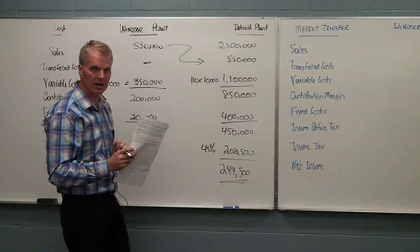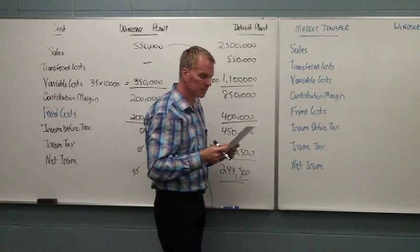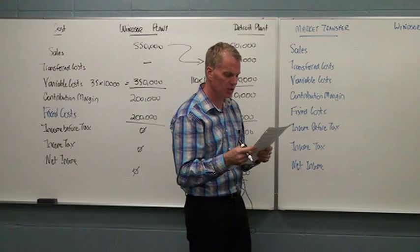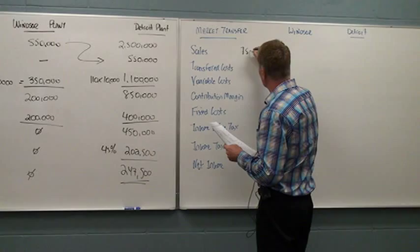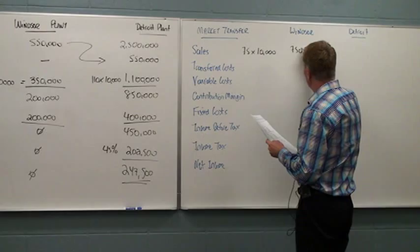The market price. Let's take a look at this now. So you're told in the question that the market price per tube is $75 per tube. So if Windsor was going to use that rate, that's the sales amount that they would basically record. So $75 times 10,000 tubes, $750,000.